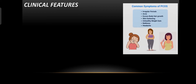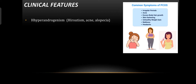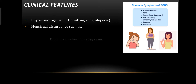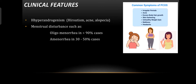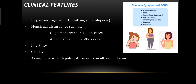What are the clinical features of PCOS? The commonest symptoms are hyperandrogenism — including hirsutism, acne, and alopecia — and menstrual disturbance. In most cases, patients complain of oligomenorrhea in more than 90 percent of cases, amenorrhea in 30 to 50 percent of cases, infertility, obesity, or may be asymptomatic with polycystic ovaries found incidentally on ultrasound scan.